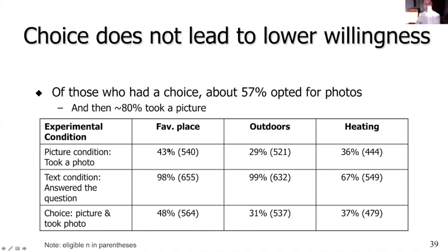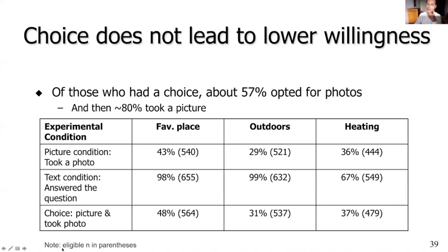In the text condition, almost everyone was willing to answer a survey question — not unexpected, since these are panel respondents who are used to it. In the third condition where we gave people a choice, they first had to say yes and then actually take and share the picture — more steps involved. But comparing condition one and condition three, the proportion of people who actually sent us the picture is more or less the same. Giving people a choice does not decrease willingness, which was quite surprising to us.